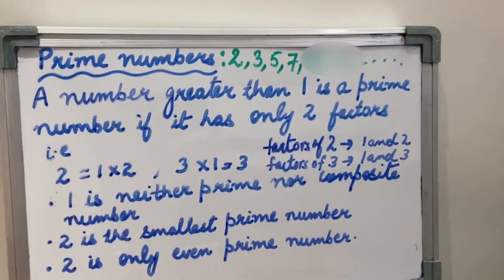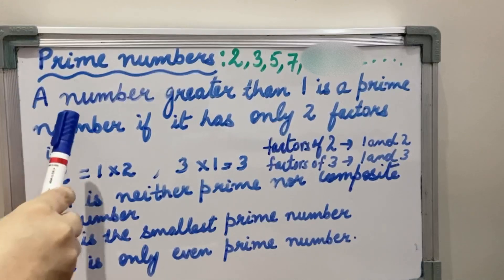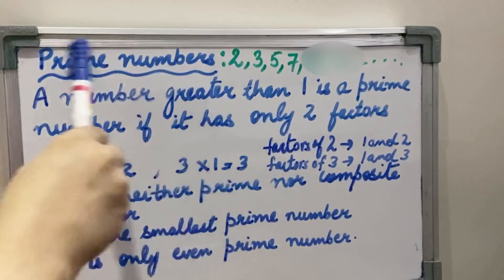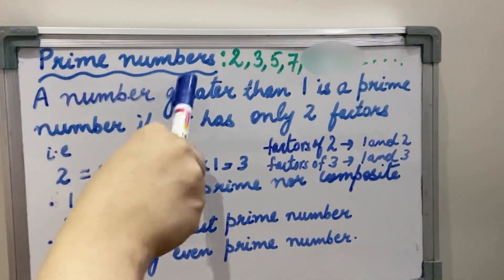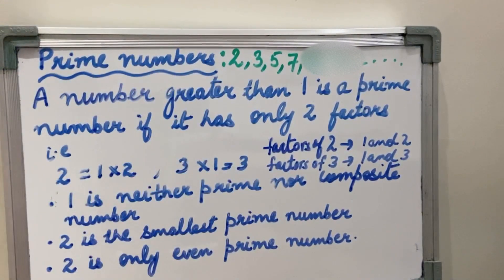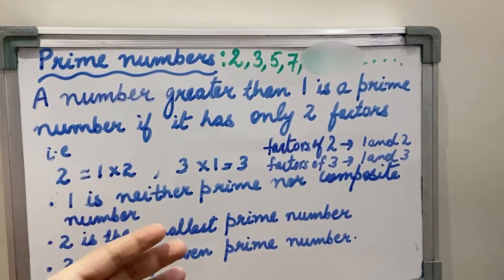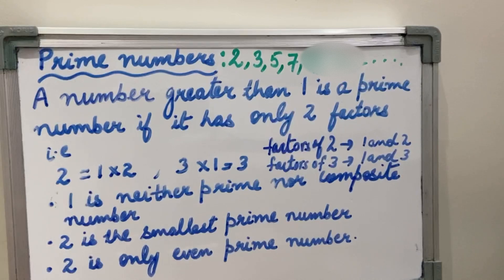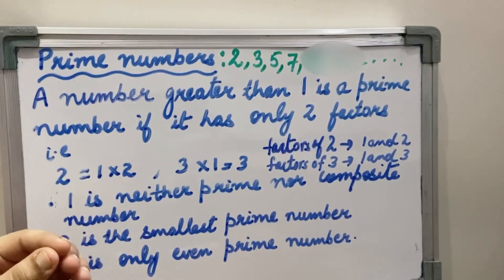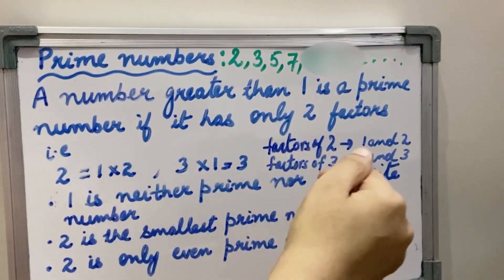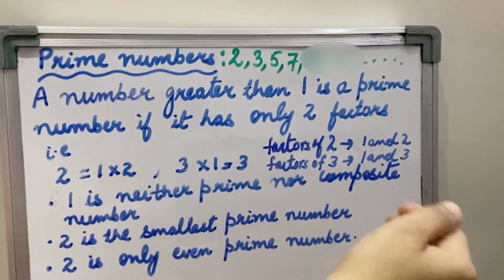What is that power? Any composite number can be written as a product of Prime Numbers. These Prime Numbers will become their factors. Any composite number we can write as a product of Prime Numbers. So this is the special power of Prime Numbers — you can take any composite number and write it as a multiplication of Prime Numbers.